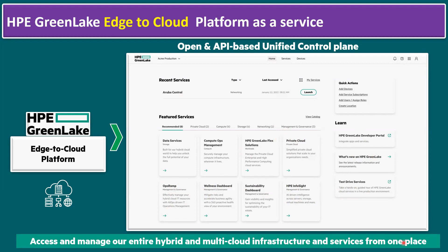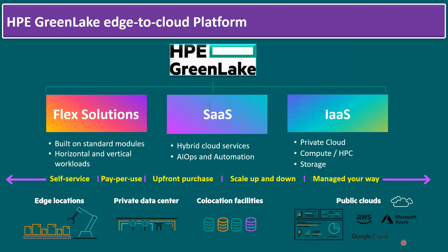Within the Edge-to-Cloud platform, there are multiple tiles that can be grouped into three main solution blocks: Flex Solutions, Software as a Service, and Infrastructure as a Service. Under Flex Solutions, you can build on standard modules with horizontal and vertical workloads. Software as a Service includes multiple hybrid cloud services and AIOps and automation. Infrastructure as a Service includes private cloud — HPE Dedicated Private Cloud Enterprise — compute, high-performance computing, and storage.